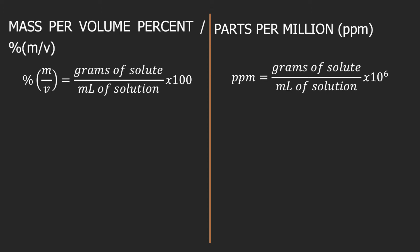Let's start with mass per volume percent. Percent mass per volume is equal to grams of solute divided by ml of solution, times 100. For ppm or parts per million, it is equal to grams of solute divided by ml of solution, times 10 raised to the 6, or 1 million.